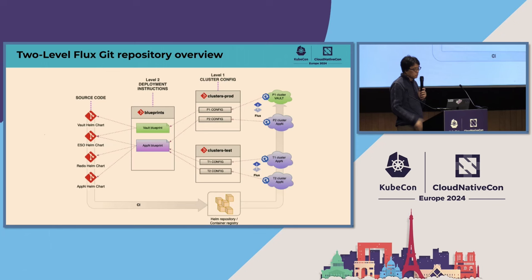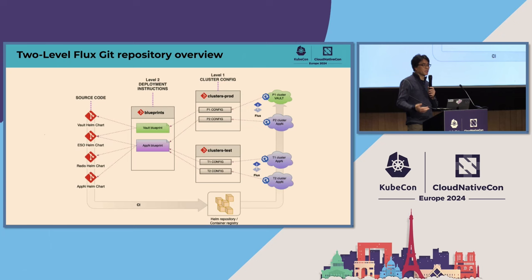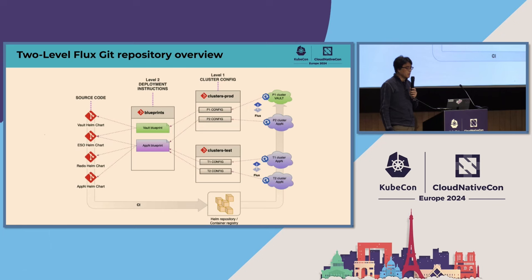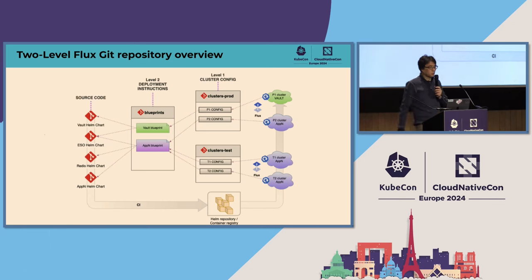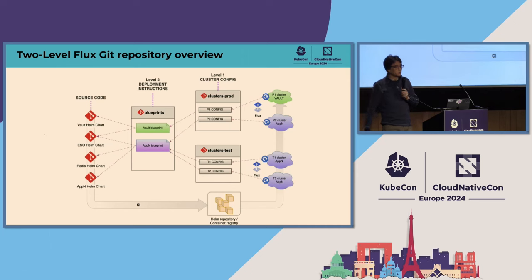There are two different deployment models we support. For testers, whenever they commit something in a Helm chart, they want their test clusters to update automatically to the version they just built — a live update. On production clusters, that's something you don't want, because you really want to make sure that whatever you deploy is pinned to certain versions of Helm charts, and you don't want developers to be able to commit something that impacts production clusters.